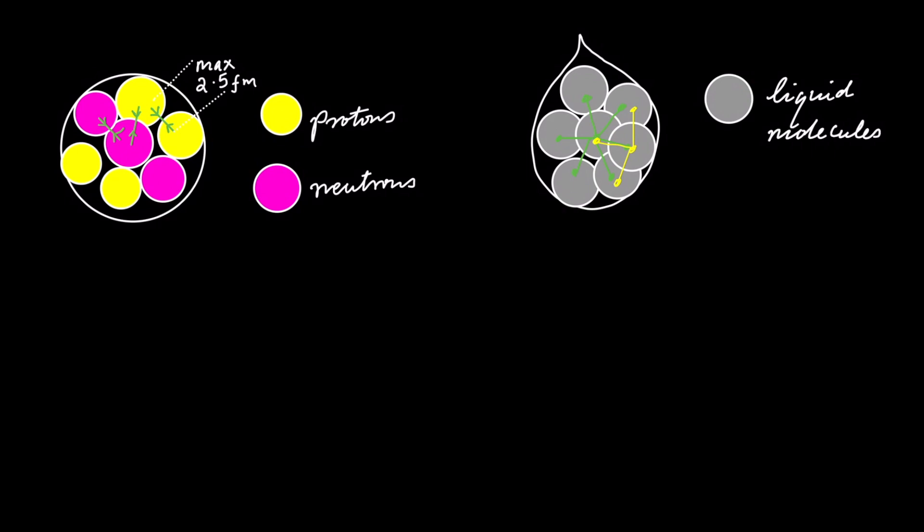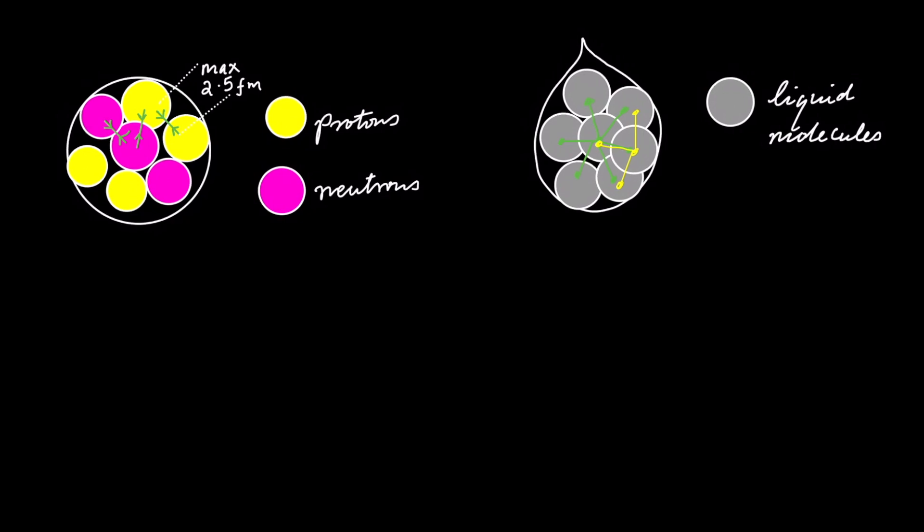We have liquid molecules that are clinging to each other. As shown, the molecules in the center will be pulled equally in all directions by the adjacent molecules, whereas the surface molecules will experience an unbalanced force.